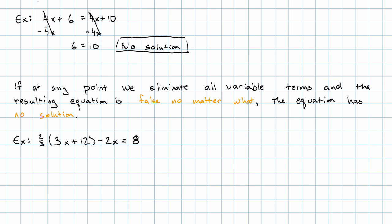Well, our first step would be simplifying this left hand side. So 2 thirds of 3x plus 12 minus 2x.